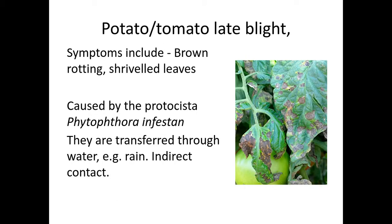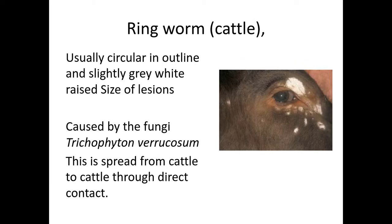Potato and tomato blight is caused by a protoctist and is transferred through water or rain — indirect transmission. Ringworm in cattle is caused by a fungus and is spread from cattle to cattle through direct contact, as you can see in the image.